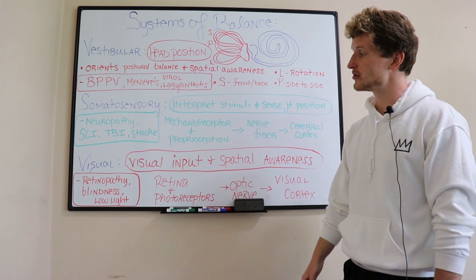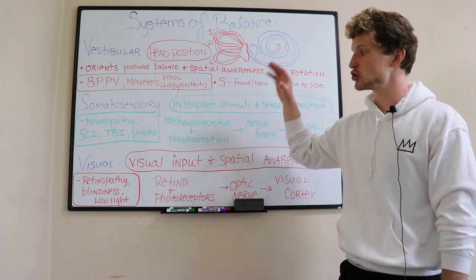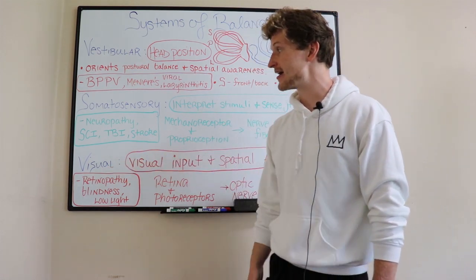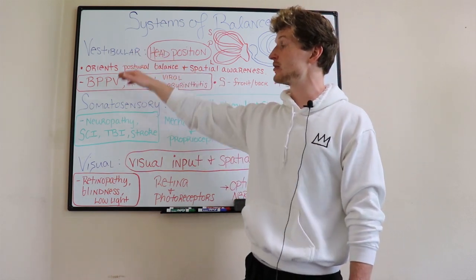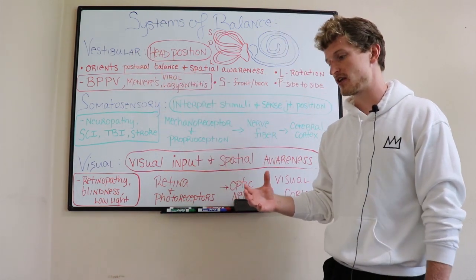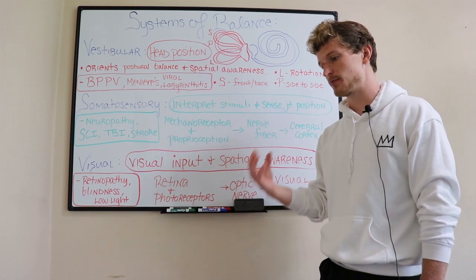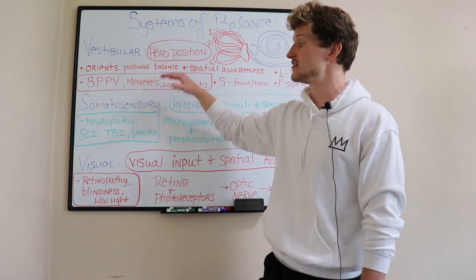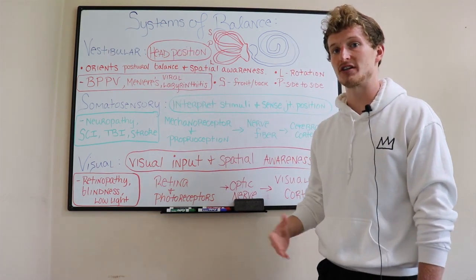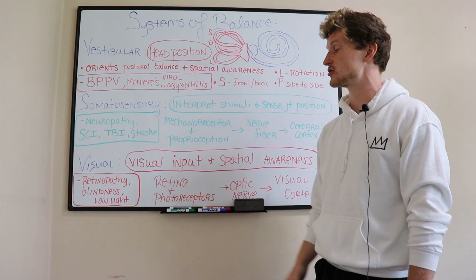So all three of these, we went over some infarcts, and we have to train, whether it's training balance with our eyes closed, training balance on a compliant surface, or training balance with head movements. These are the things we have to make sure we're doing to ensure we're taxing people's balance, improving people's balance, and using alternative systems if we have an infarct or deficit or pathology in one of these three systems.